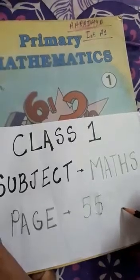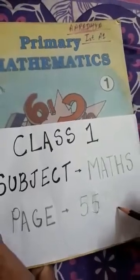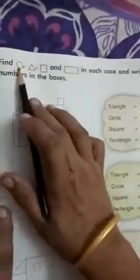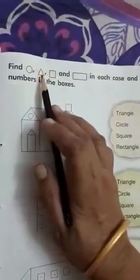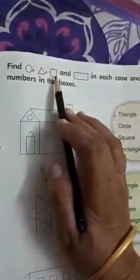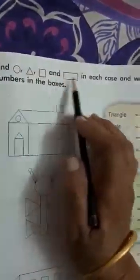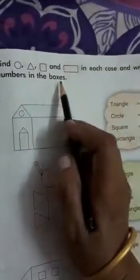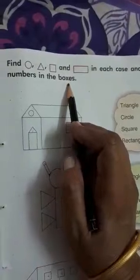Good morning students. Take out your math book page 55. Find circle, triangle, square and rectangle in each case and write their numbers in the boxes.